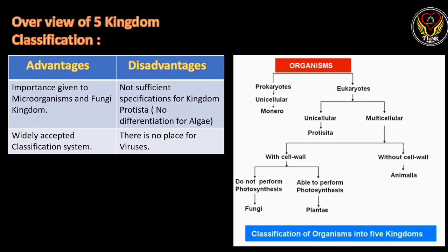The disadvantages are: first, there is not sufficient specialization for kingdom Protista — it is not specified clearly. Second, there is no place for viruses. Viruses play an important role in our ecosystem, but they have no place in this five kingdom classification.